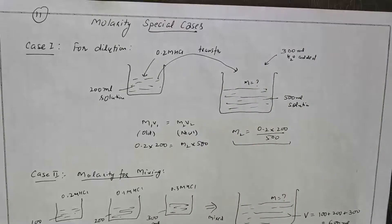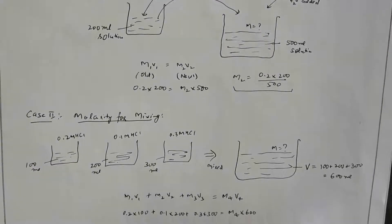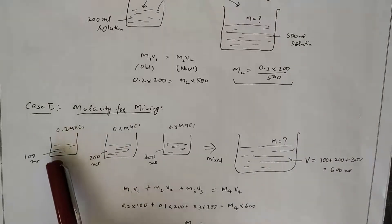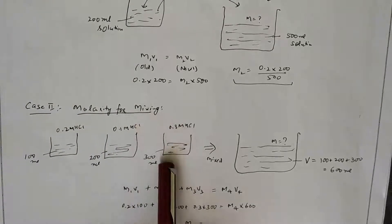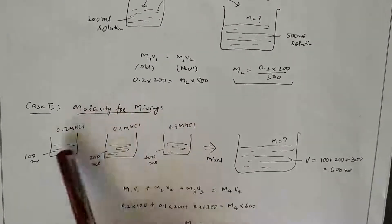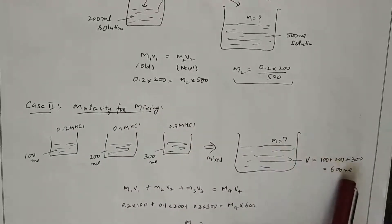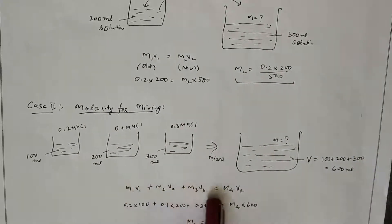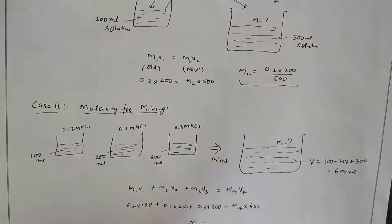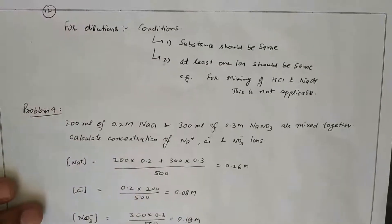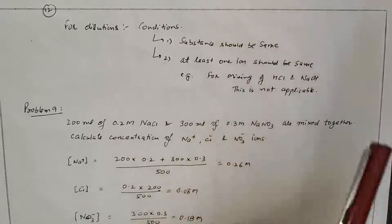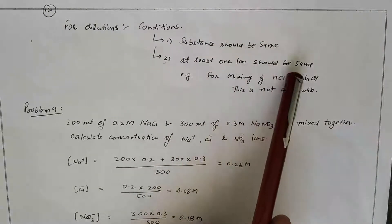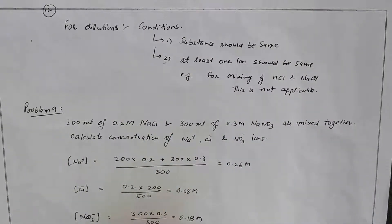Second case: mixing. For example, 100 mL of 0.2 M HCl, 200 mL of 0.1 M HCl, and 300 mL of 0.3 M HCl are mixed; total volume = 600 mL. The equation for mixing is M = (M1V1 + M2V2 + M3V3) / total volume. Conditions: the substance must be the same, or at least one common ion must be present.